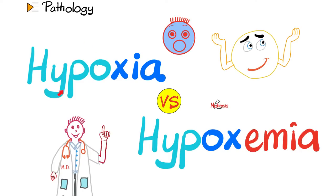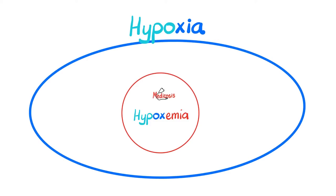What does hypo mean? Low. Oxy — oxygen. How about hypo? Also low. Oxy — oxygen. Emia — blood. So here's your answer in a nutshell: hypoxemia is a subtype of hypoxia. Put differently, every hypoxemia is a hypoxia, but not every hypoxia is a hypoxemia. Hypoxia could be hypoxemia, or it could be something else.